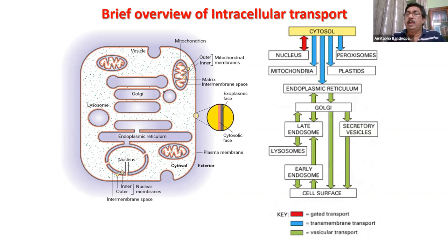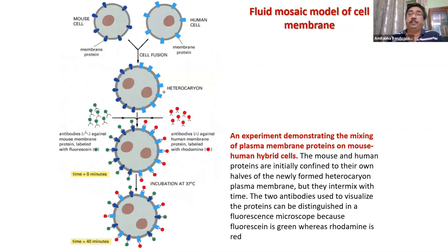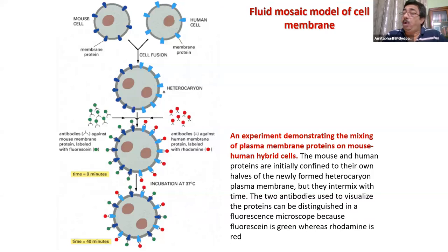Traffic happens in multiple directions once the proteins have started their journey in the cytosol. All of this is possible because of the extremely fluid nature of the cell membrane — we all know it is called the fluid mosaic model.